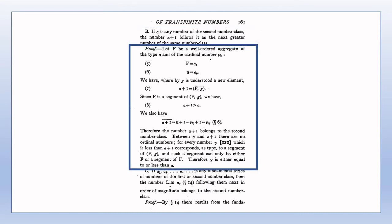The proof of Theorem B is not difficult, but I'll just make a few remarks. At point 7, the ordinal number of the aggregate Fg is equal to alpha plus 1, following from point 1 of section 8. For point 8, that alpha plus 1 is greater than alpha follows from point 2 of section 14. The notation alpha plus 1 with a single bar over it represents the cardinal number of the ordinal number alpha plus 1, and similarly for alpha.